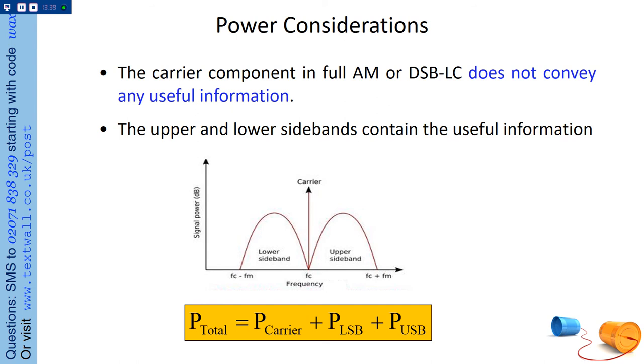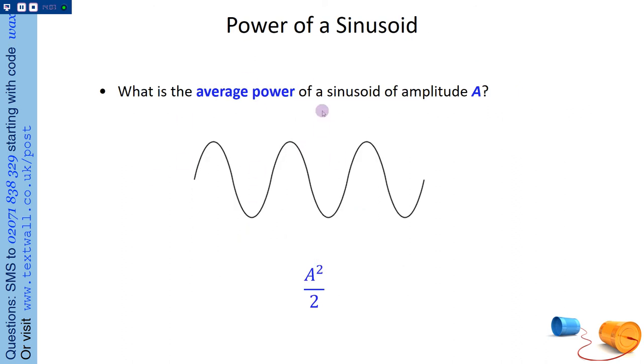So the total power in this signal, obviously this is exaggerated because there's a big gap here, but the total power in that signal is the sum of the power in the carrier and the power in the sidebands. Where do you think there is more power, in the carrier or in the sidebands? It looks like it's in the sidebands, but it's actually in the carrier. The carrier contains more power than the sidebands. Okay? And we'll see why. So think back to signals and systems. What's the power of a sine wave? It's just the amplitude squared over 2.